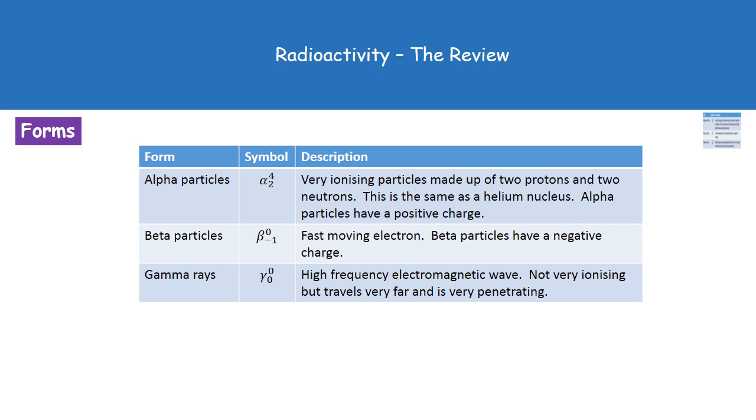Finally, we have our gamma rays. So I've got a symbol for gamma there. No mass number, no atomic number. Because this is purely a high frequency electromagnetic wave. Now our gamma rays are not very ionizing, but they are the most penetrating. That means they will travel through the greatest amount of things and can travel very far.